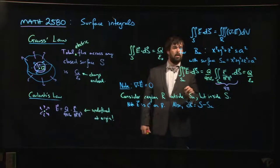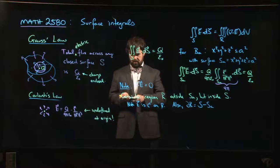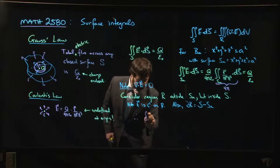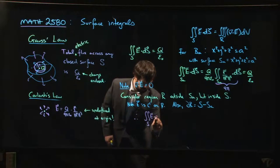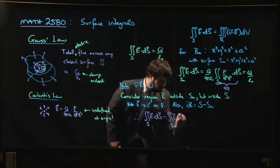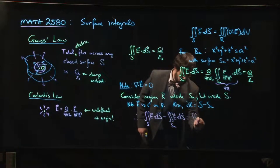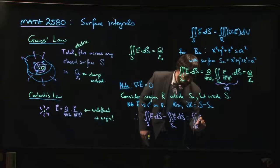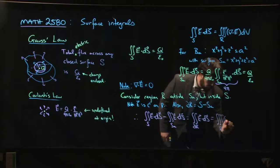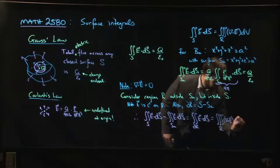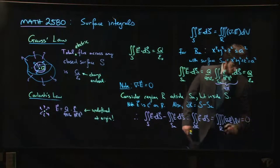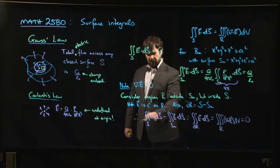Now we know that the difference between the integral over our original surface and the integral over the ball, well this is just the integral of E over the boundary of R, and by the divergence theorem that's the same thing as the integral over R of the divergence of E. But as I mentioned, we showed several videos back that that divergence is zero, so this integral is zero. And so that means that these two integrals have to be equal.